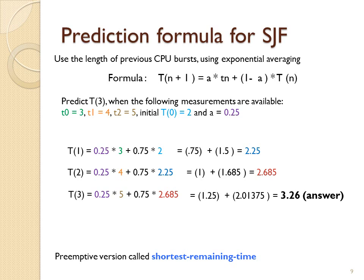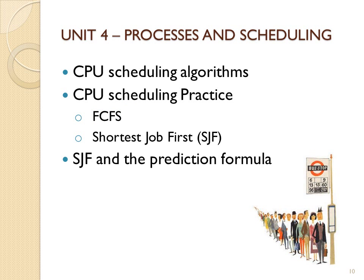With the prediction formula, it's just a plug-in, and the information will need to be provided for you to do exercises involving it. More importantly, understand why it's used: Shortest Job First gives the minimum average waiting time for a set of processes, and putting shorter tasks first may be best for your system. The prediction formula is a good way to implement this algorithm without actually having the CPU burst lengths. Thank you, and in the next video we will do more CPU scheduling practice.